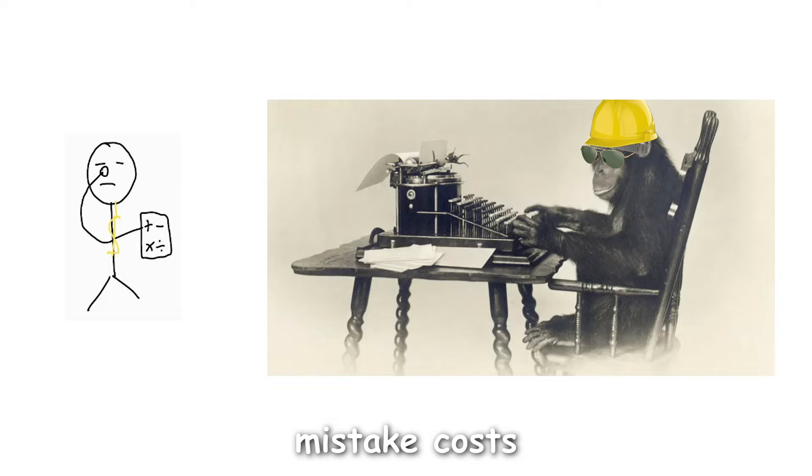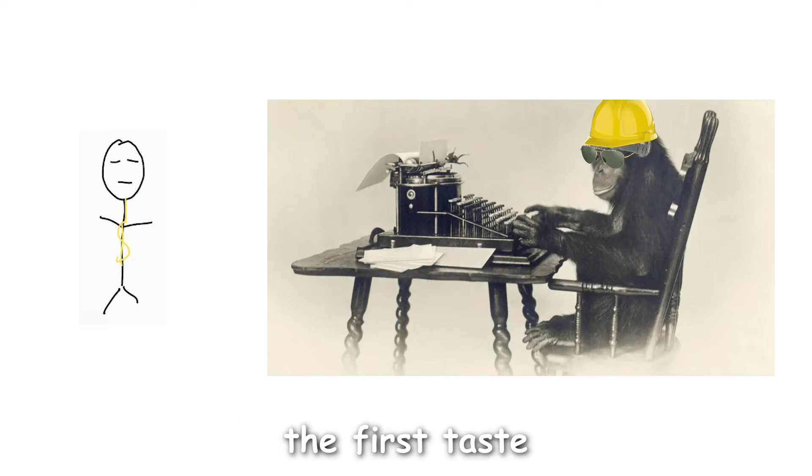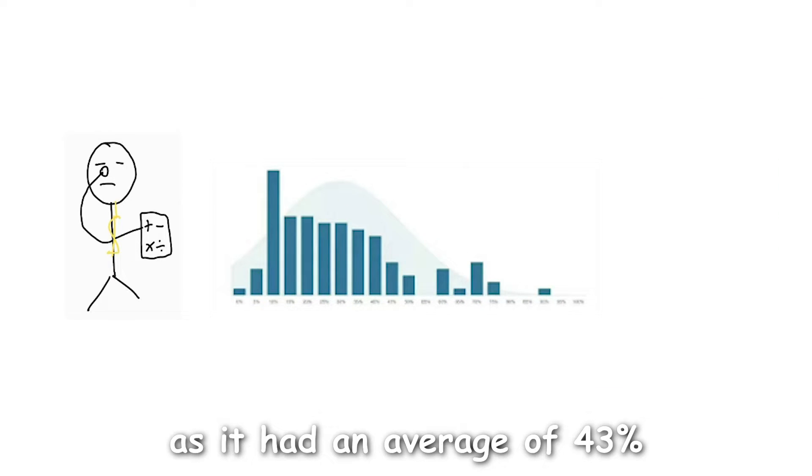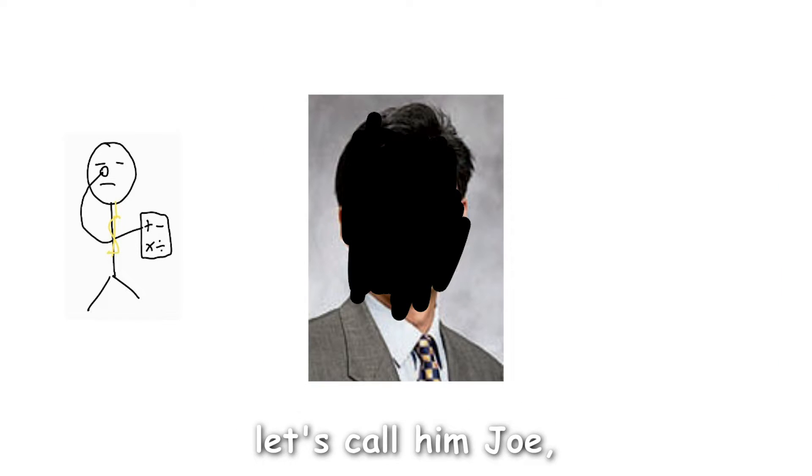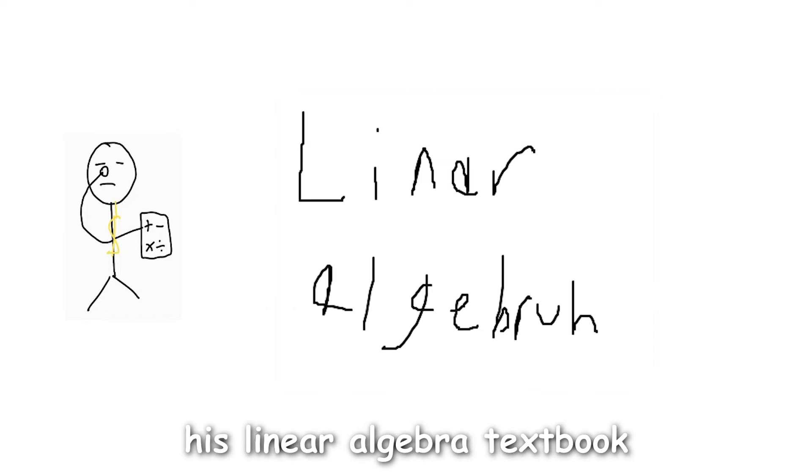This midterm was also the first taste of engineering midterms, as it had an average of 43%, higher than expected to be honest. Also, the course coordinator, let's call him Joe, made everyone purchase his linear algebra textbook he created, which was filled with mistakes and typos and cost $150.